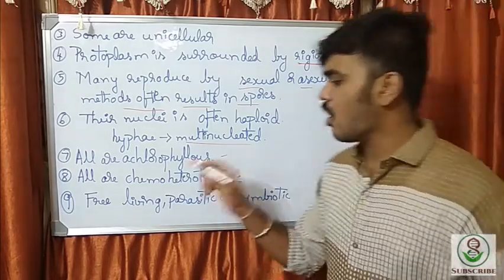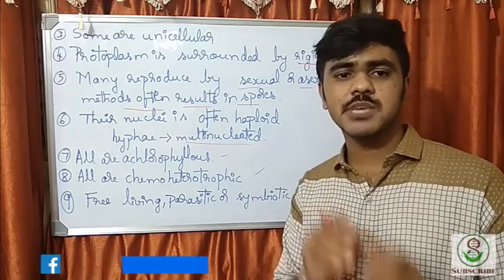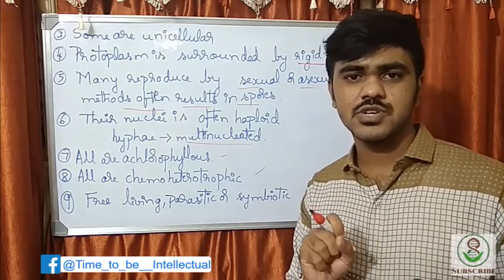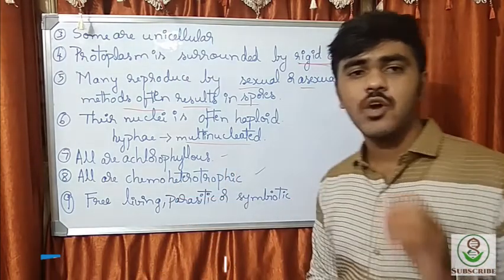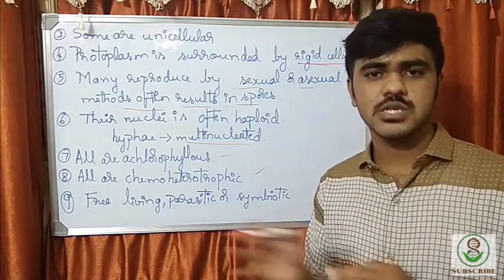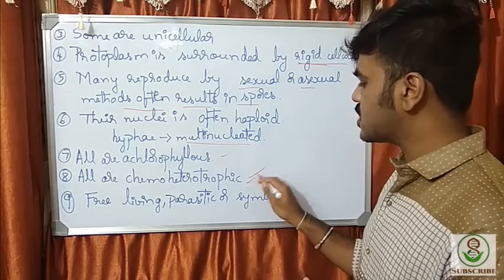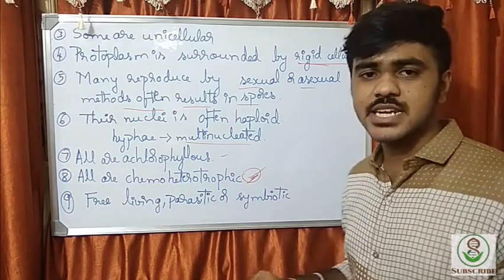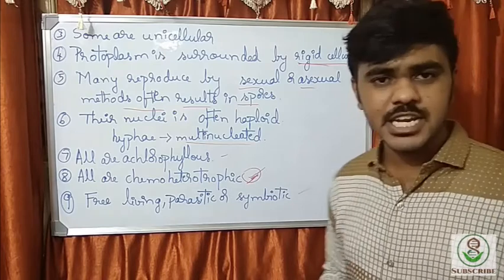All fungi are achlorophyllous — there is no chlorophyll content. All are chemoheterotrophic, meaning they depend on chemicals, either as parasites or predators. They suck nutrients from free components in the environment — they obtain carbon sources from the environment, from the host, etc. They depend on chemical reactions and cannot synthesize their own food. They are either free-living, parasitic, or symbiotic.